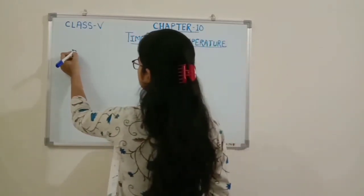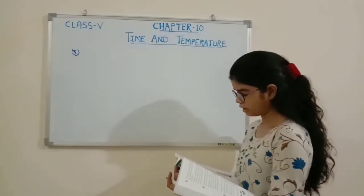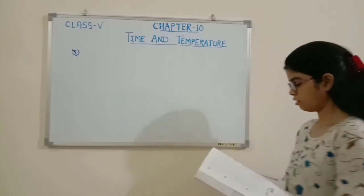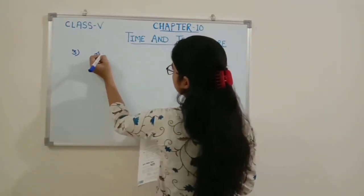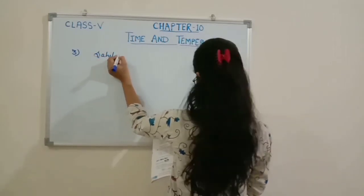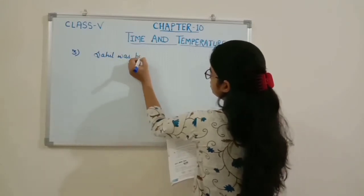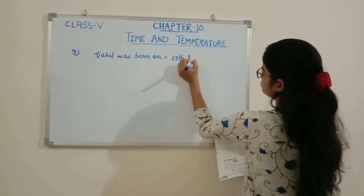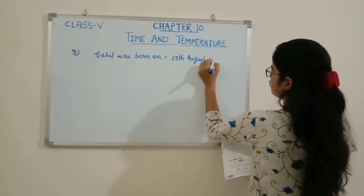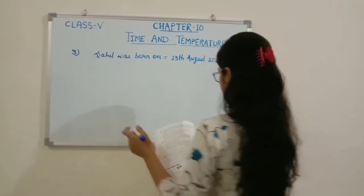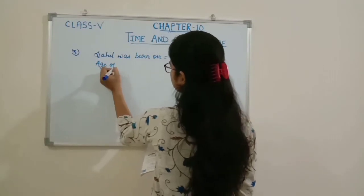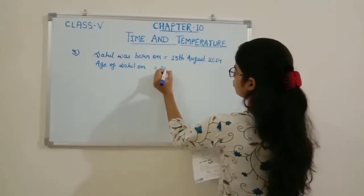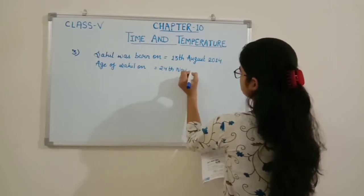So the third question is: Sahin was born on 13th of August 2014. We have to find how old he was on 24th of November 2014. Sahin was born on 13th of August.